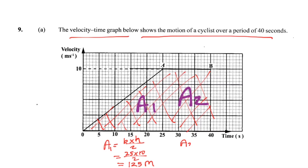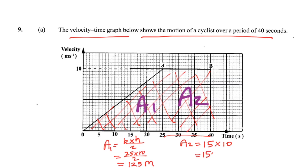A2 represents a rectangle. From 25 to 40 is 15 seconds, and the height is 10. So 15 times 10 gives 150 meters.